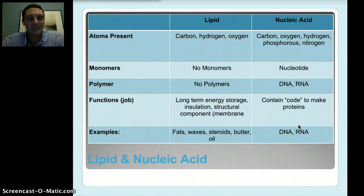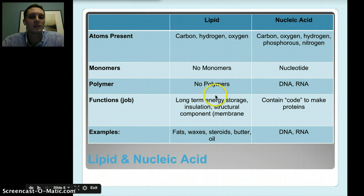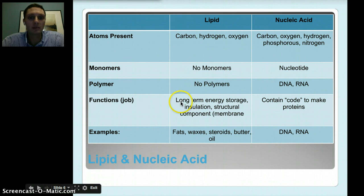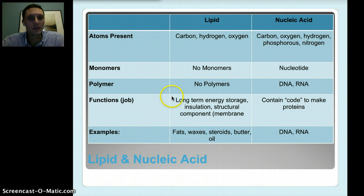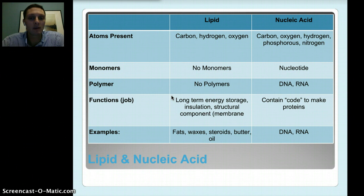Lipids are fats — that's another name for fat. They're made up of carbon, hydrogen, and oxygen, and they don't have monomers or polymers. Their function is really long-term energy storage. Think about organisms that hibernate, like bears — during the summer they eat a lot of fatty foods high in lipids to build up a large fat reserve that provides energy while hibernating in winter when there's less food. Fat is also used as insulation, like blubber in whales or sea lions. It's also a structural component found in the cellular membrane. Examples include waxes, steroids, butter, oil, and fats.